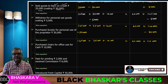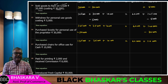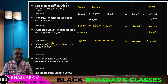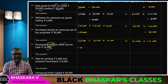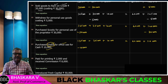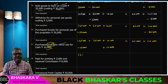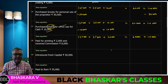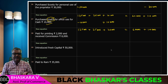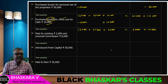Purchased chairs for office use for cash. Chairs are furniture, so furniture increases. Cash decreases by 10,000. New equation: cash 1,25,000 plus goods 25,000 plus furniture 20,000 equals creditors 60,000 plus capital 1,10,000. Left hand side: 1,50,000 plus 20,000 equals 1,70,000. Right hand side matches. Equation balanced.